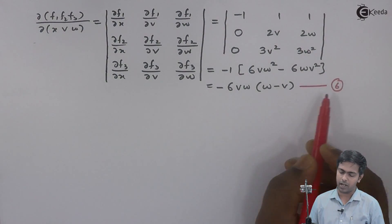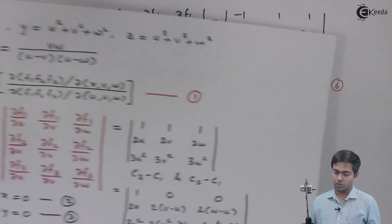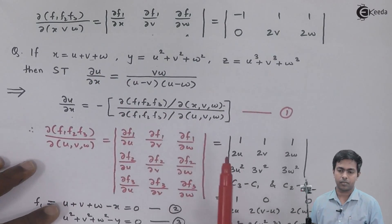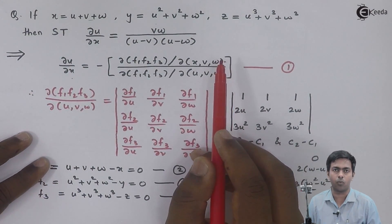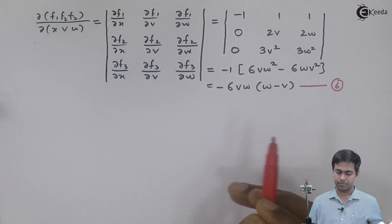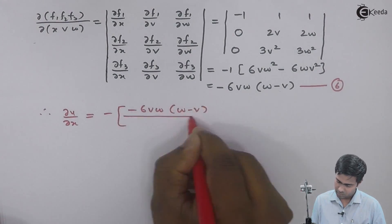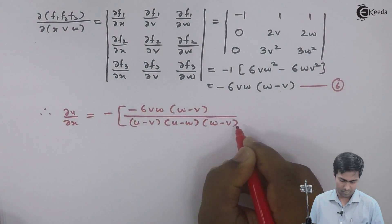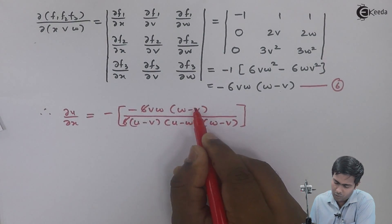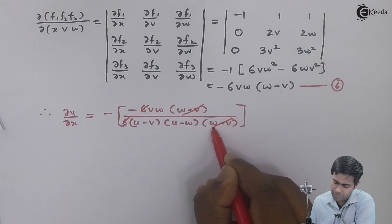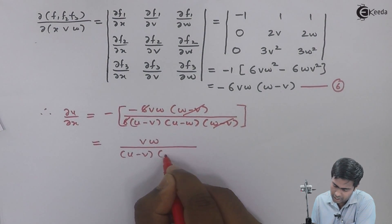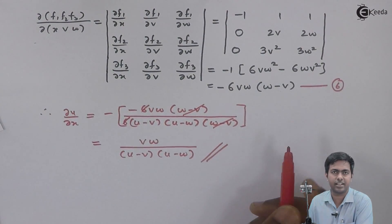Now substituting equations 5 and 6 into equation 1: ∂u/∂x equals minus of equation 6 in the numerator divided by equation 5 in the denominator. After cancelling the factor of 6 and the (w − v) terms, we get vw divided by (u − v)(u − w), which is the required result. Thank you.